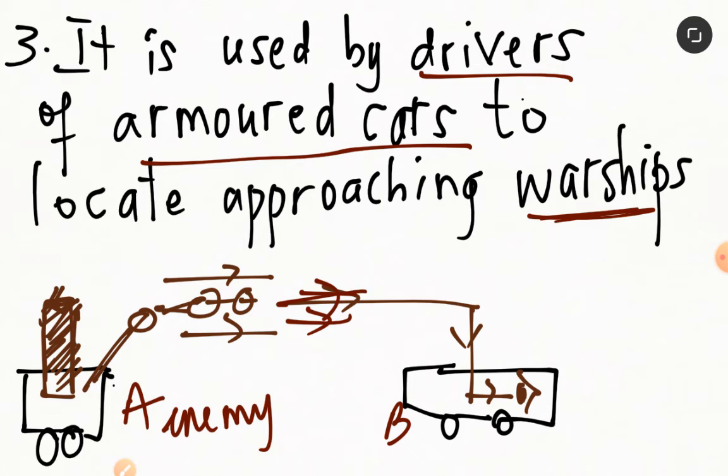So we have mirror M1 again. So mirror M1 will reflect the lights onto mirror M2 here. Then finally, the light rays are directed into the eyes of the observer. And the enemy warship is located. And subsequently, you will be able to adjust yourself in order to be at an advantage. So this is the third use.